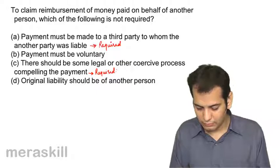A contingent contract dependent upon the non-happening of a future uncertain event becomes void when such event: A) happens, B) does not happen, C) becomes impossible, D) none of these. This contingent contract is dependent upon non-happening. When the event happens, the contract becomes void because it is based on non-happening. If the event does not happen, the contract becomes enforceable. But if the event happens, the contract becomes void. The answer is A: happens.